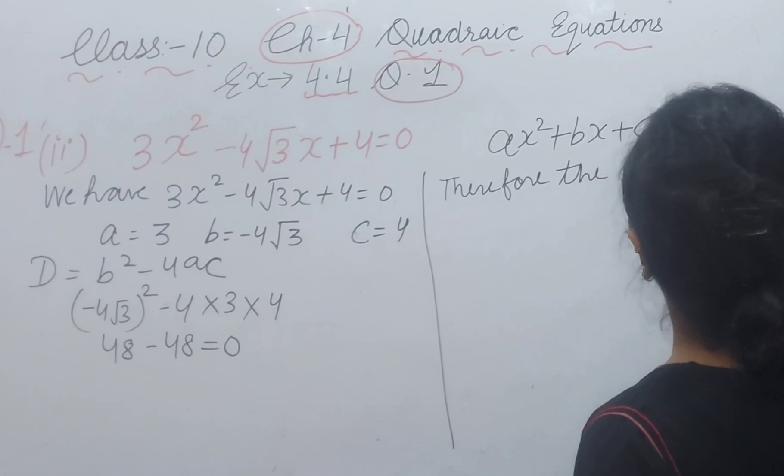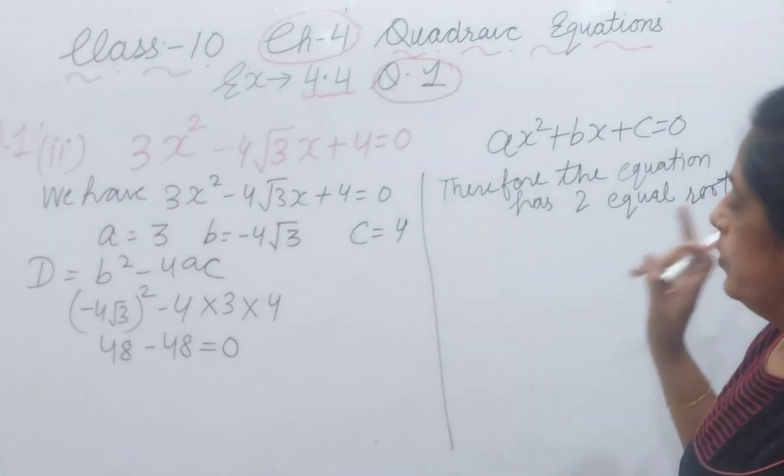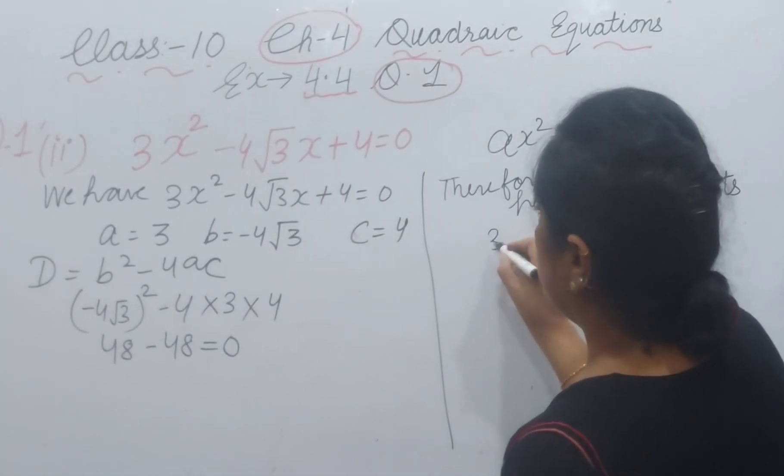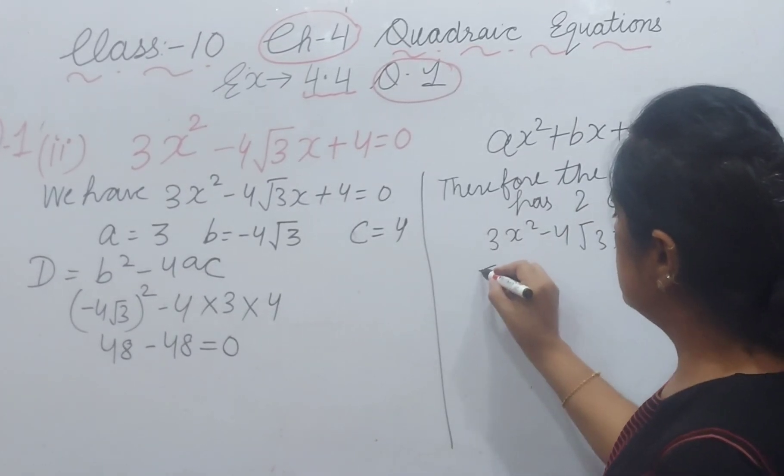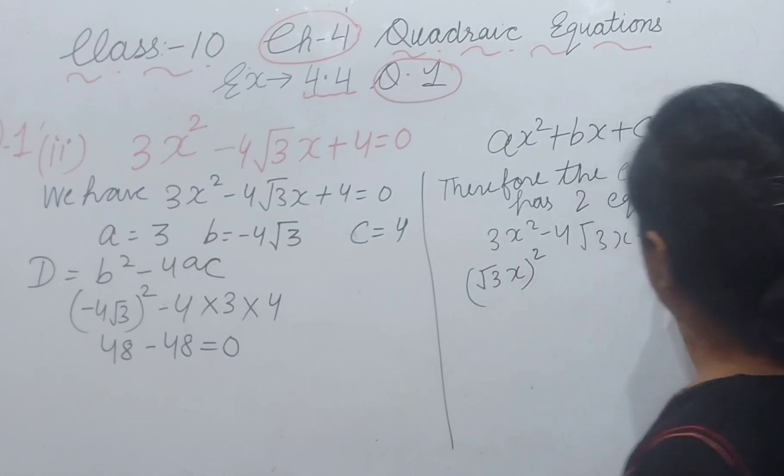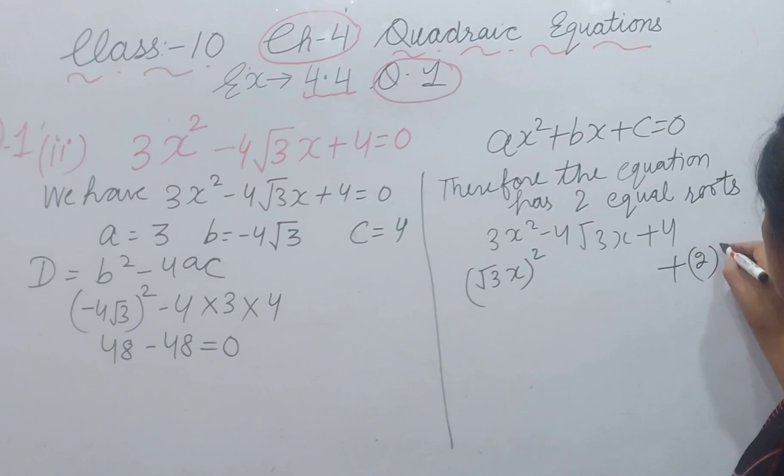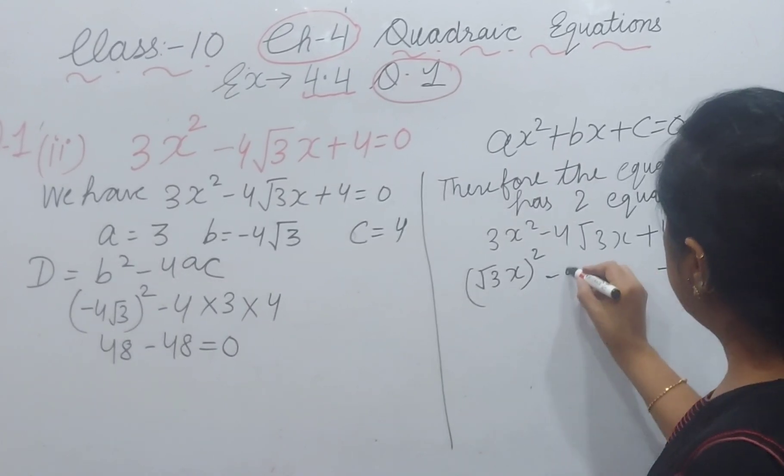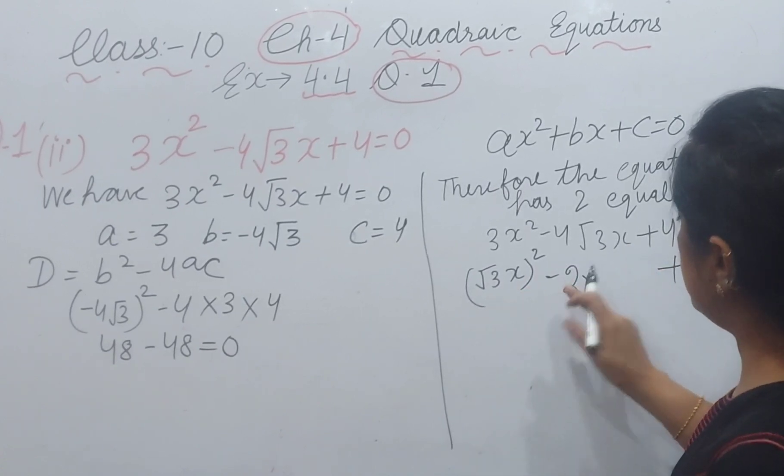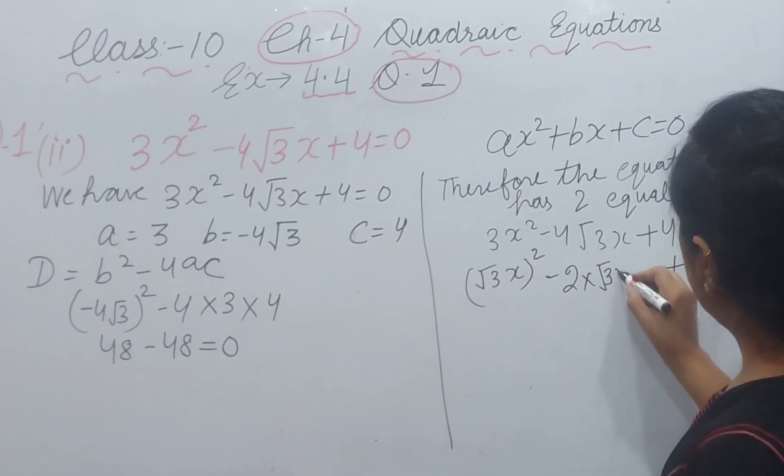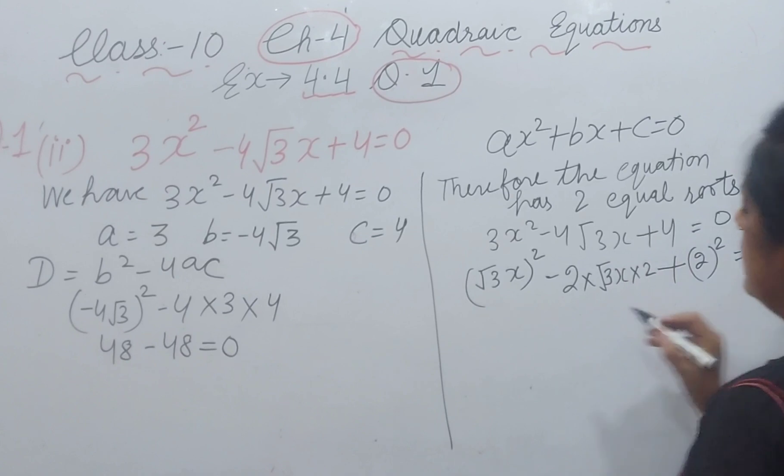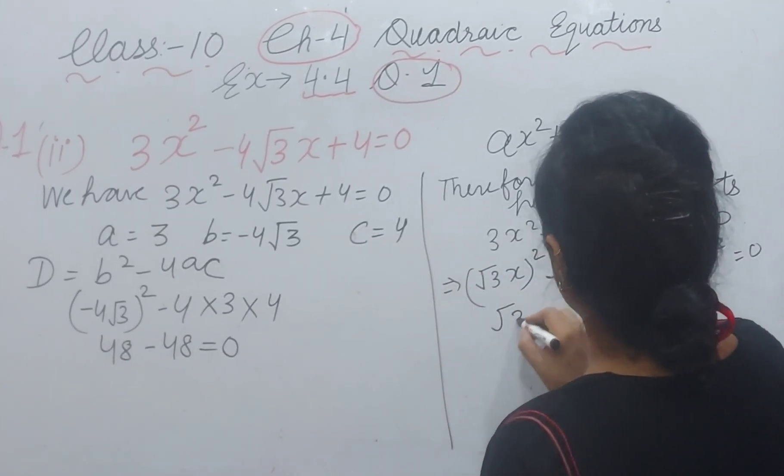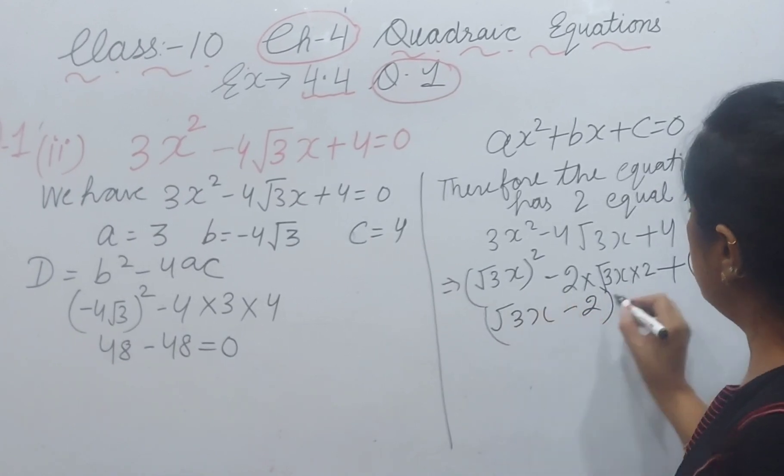The equation has two equal roots because D = 0. We can write it as (√3x)² + 2² - 2(√3x)(2) = 0, which is the form a² + b² - 2ab. This means it is (√3x - 2)² = 0.